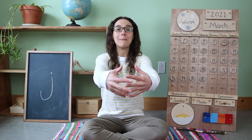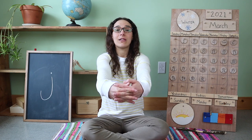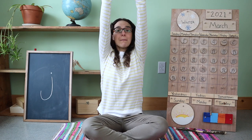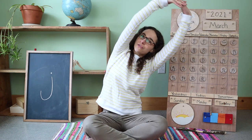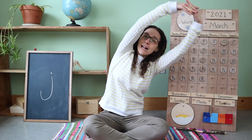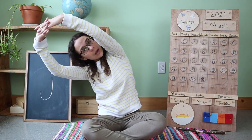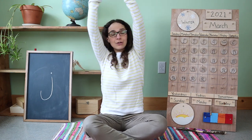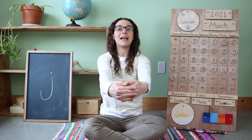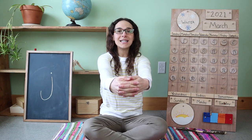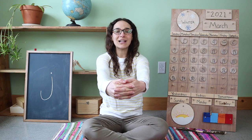Let's make our arms into a big circle out in front of us like this. Now let's stretch that circle up, up, up over our heads and give a little stretch from one side and stretch over to the other side. Bring that circle to the top and back down in front. Now it's time to sing together — if you know the words, sing along with me.